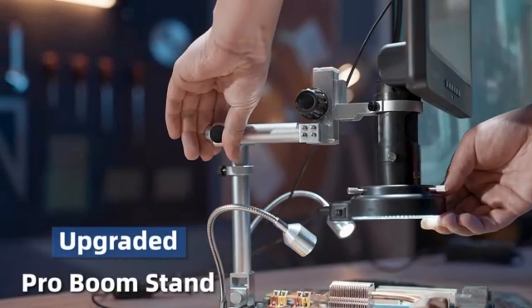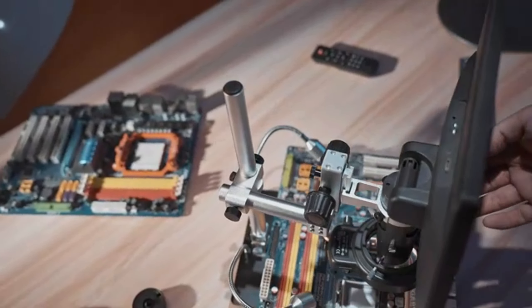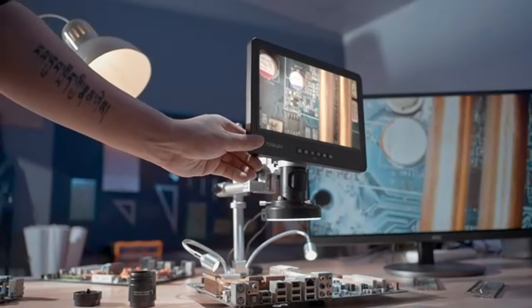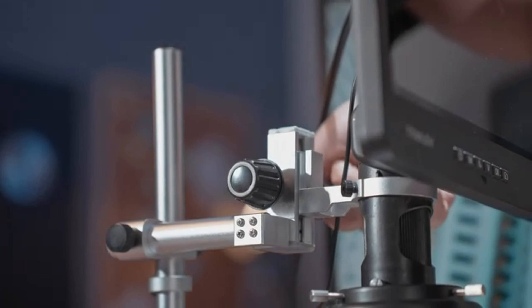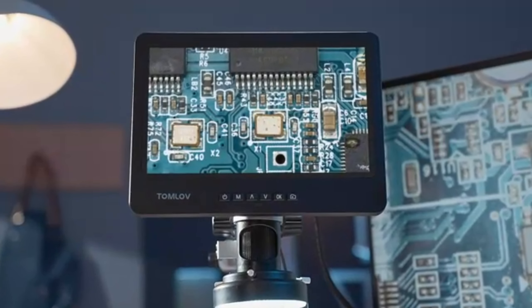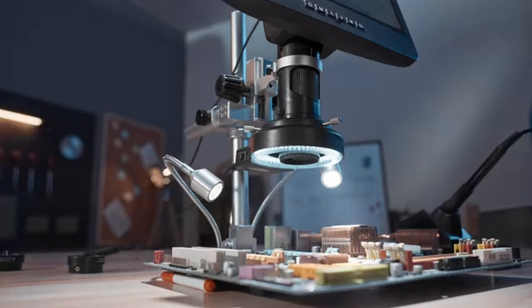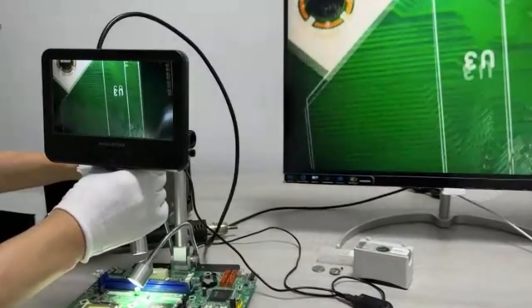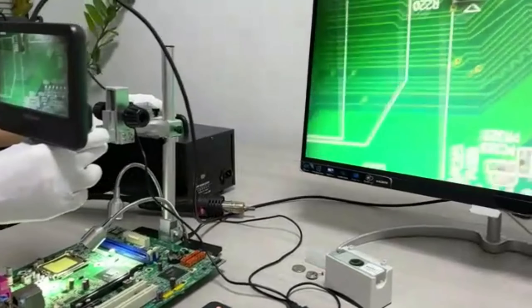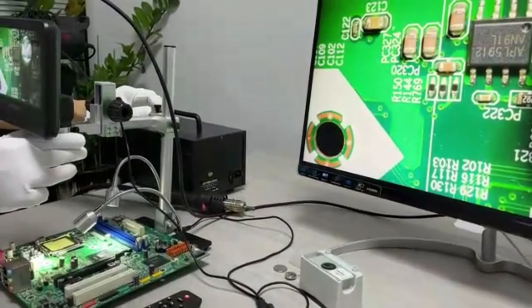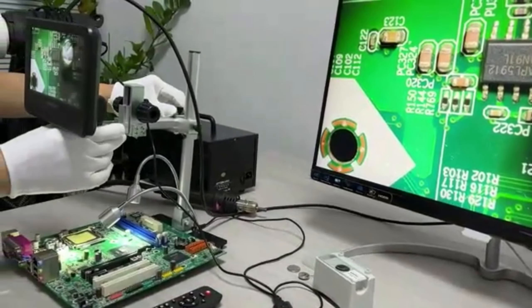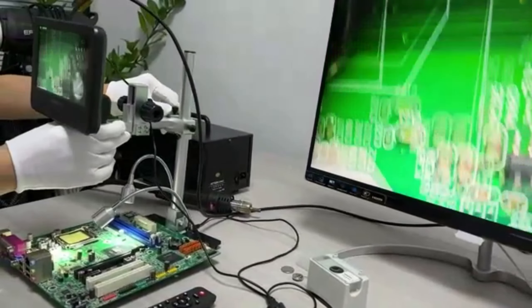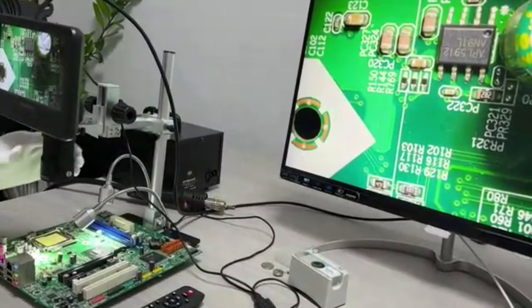Last but certainly not least, we have a fascinating tool for all the curious minds out there. The pluggable USB digital microscope with flexible arm observation stand is a remarkable gadget for exploring the micro-world. Whether you're into science, education, or just want to satisfy your curiosity, this digital microscope is an incredible tool for up-close examination. Let's discover the world of tiny wonders with this versatile microscope.